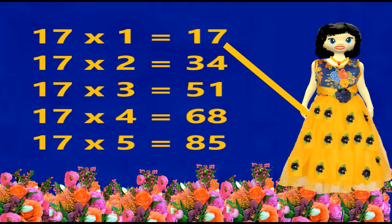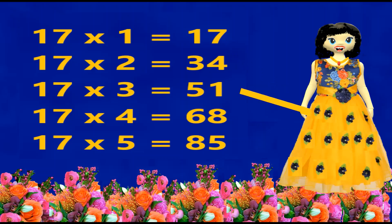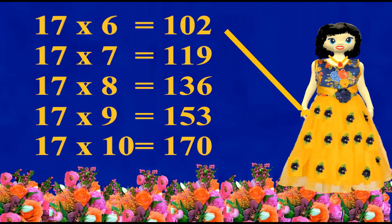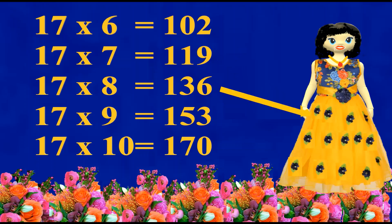Seventeen ones are seventeen. Seventeen twos are thirty-four. Seventeen threes are fifty-one. Seventeen fours are sixty-eight. Seventeen fives are eighty-five. Seventeen sixes are one hundred and two. Seventeen sevens are one hundred and nineteen. Seventeen eights are one hundred and thirty-six. Seventeen nines are one hundred and fifty-three.